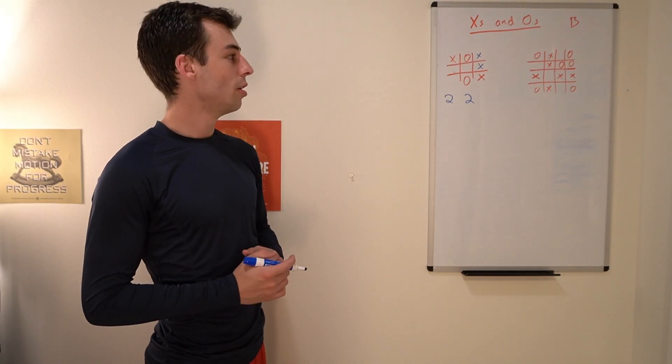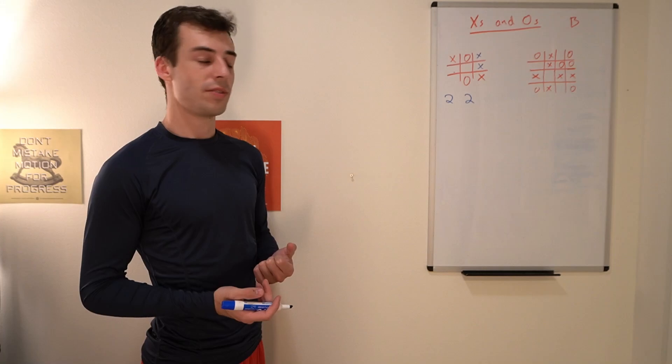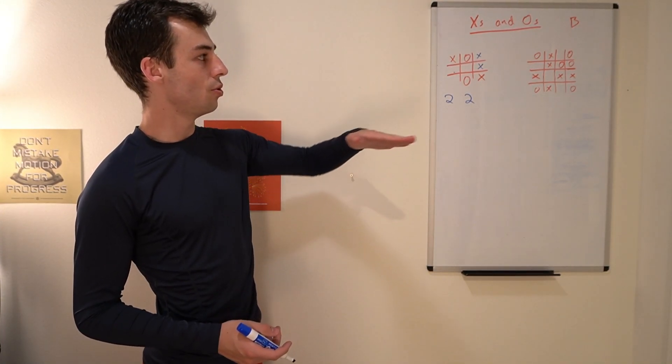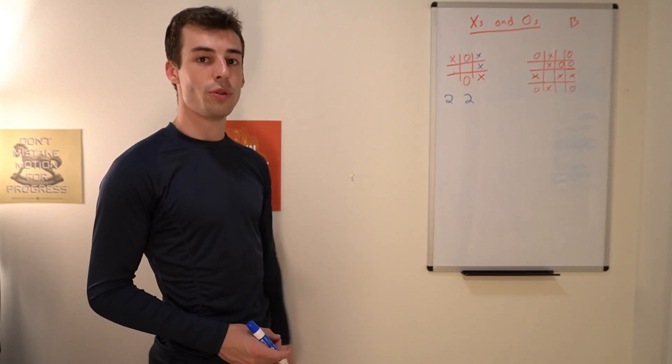In the example on the right, you might think, well, there are clearly two ways of solving it with just one X. You can do the third row, or you can do the second column.